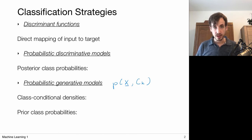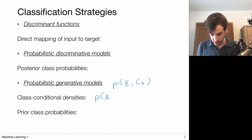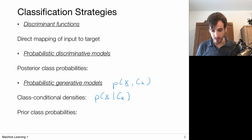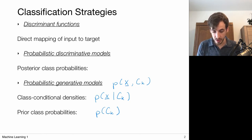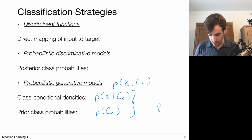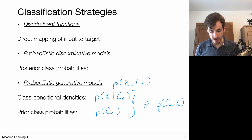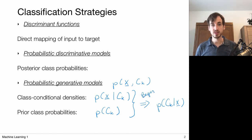We started off with probabilistic generative models. We call them generative because if we are able to model this distribution, we can also draw new samples or generate new data. We performed our modeling by modeling the class conditional densities — the probabilities of each data point x given my class c_k — in combination with the prior class probability distributions. Because the product of these two gives us the joint, and using Bayes rule we can obtain the posterior class probabilities.